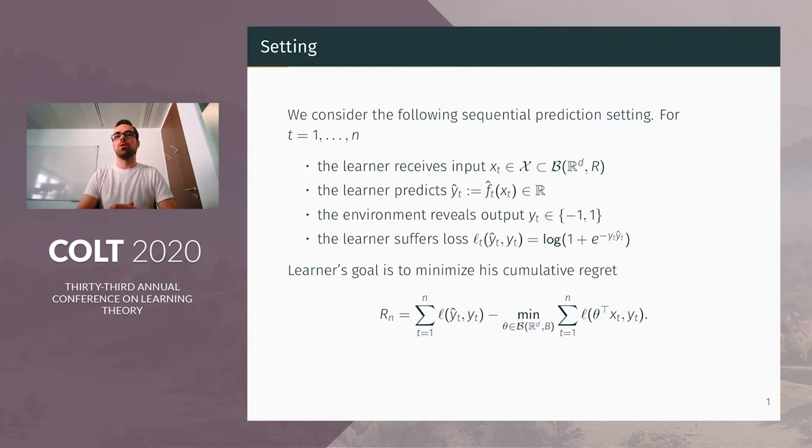We make no assumption on how the inputs and outputs are generated, and they can be chosen by an adversary who knows all the previous predictions of the learner. To assess the performance of the learner, we use the logistic loss, and the goal is to minimize the cumulative regret, which is the difference between the cumulative loss of the learner and the cumulative loss of the best function taken in a comparator class of functions.